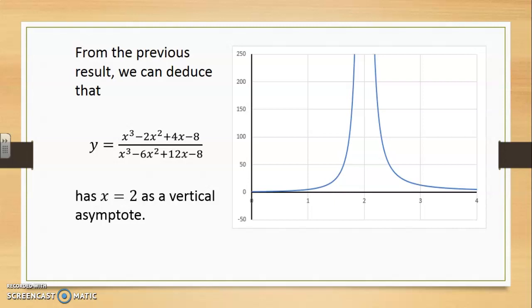So this is a really interesting problem because although we had a 0 over 0 form, the outcome did not necessarily produce a limited or a finite answer. We can still get a vertical asymptote or we can still detect a vertical asymptote following a 0 over 0 form.